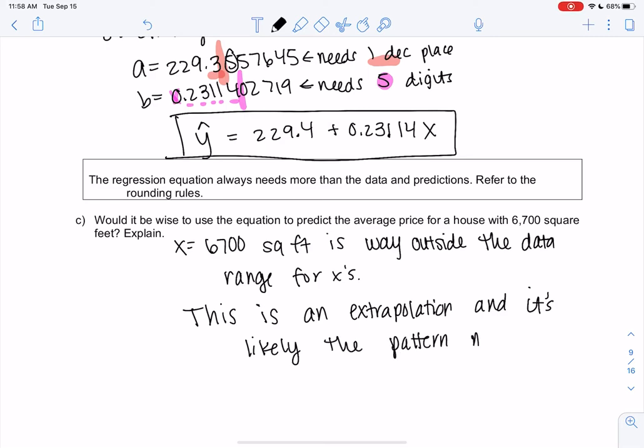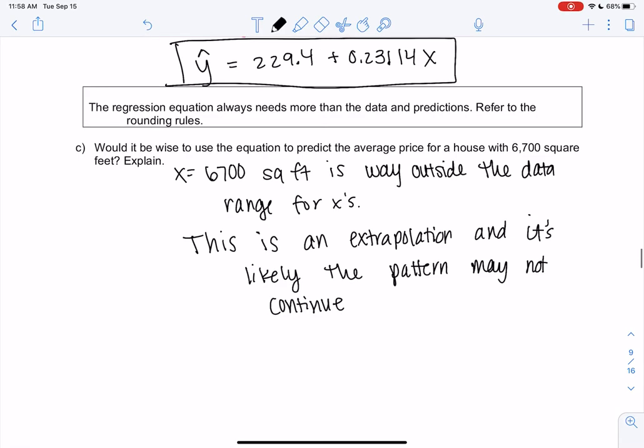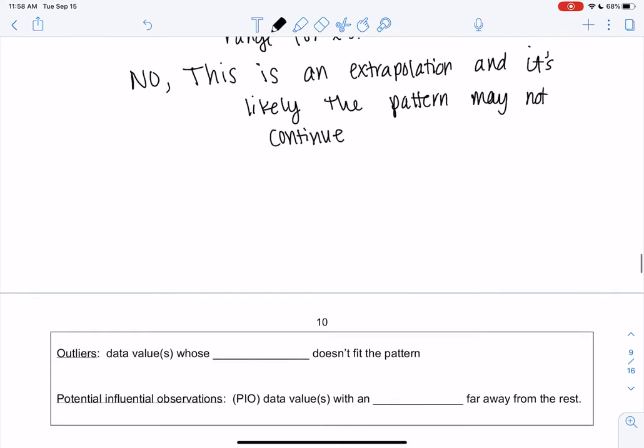And it's likely that the pattern might not continue. The pattern may not continue. 6,700 square foot houses might follow a very different pattern than 2,000 square foot houses. So I'm not even going to bother plugging it in. It's unwise, right? We shouldn't do it. So no, it is not wise.